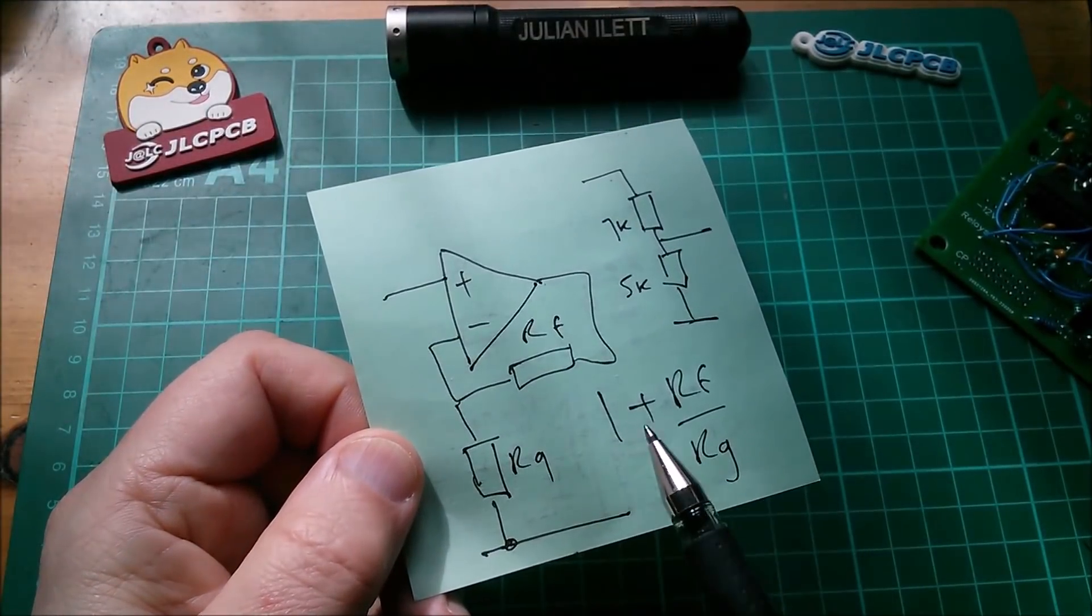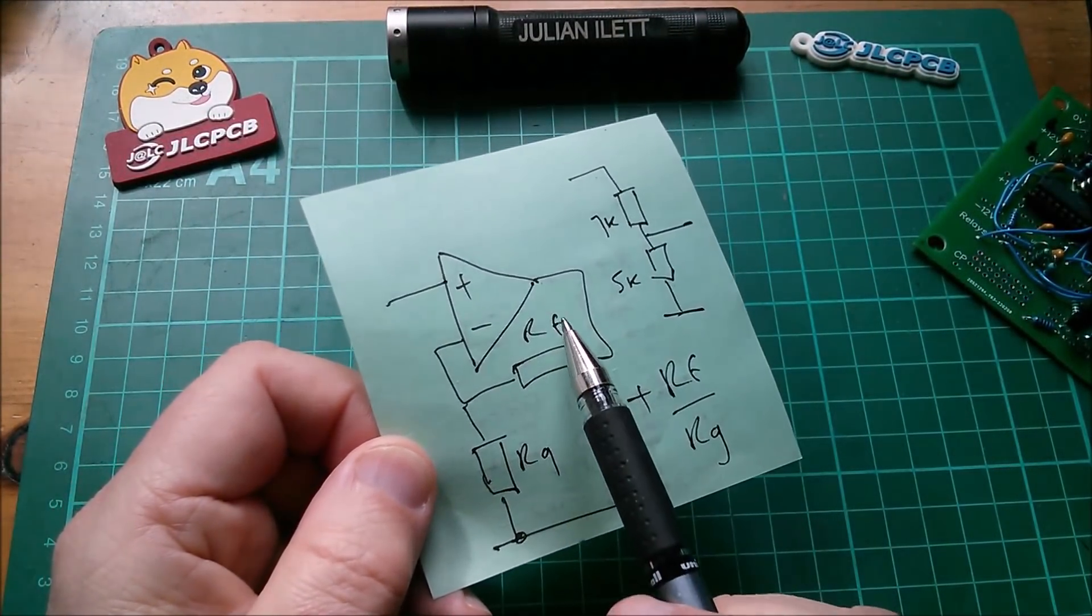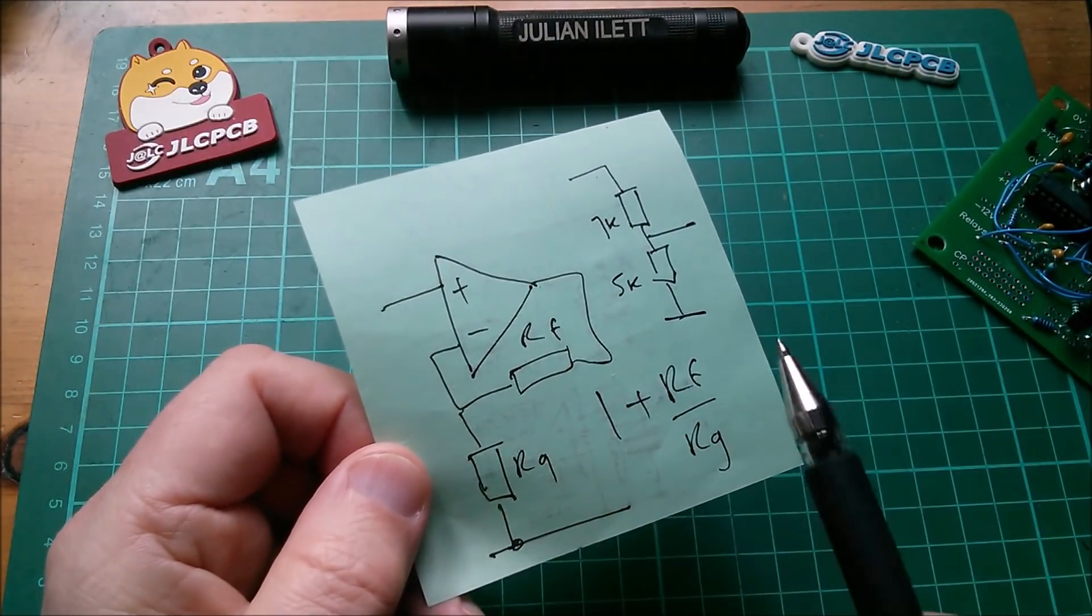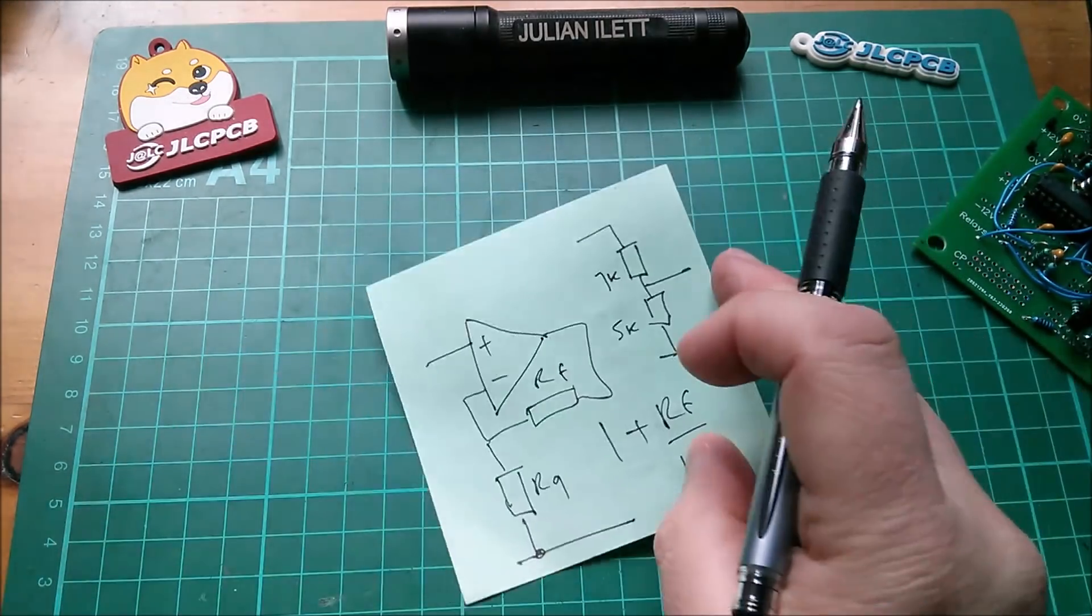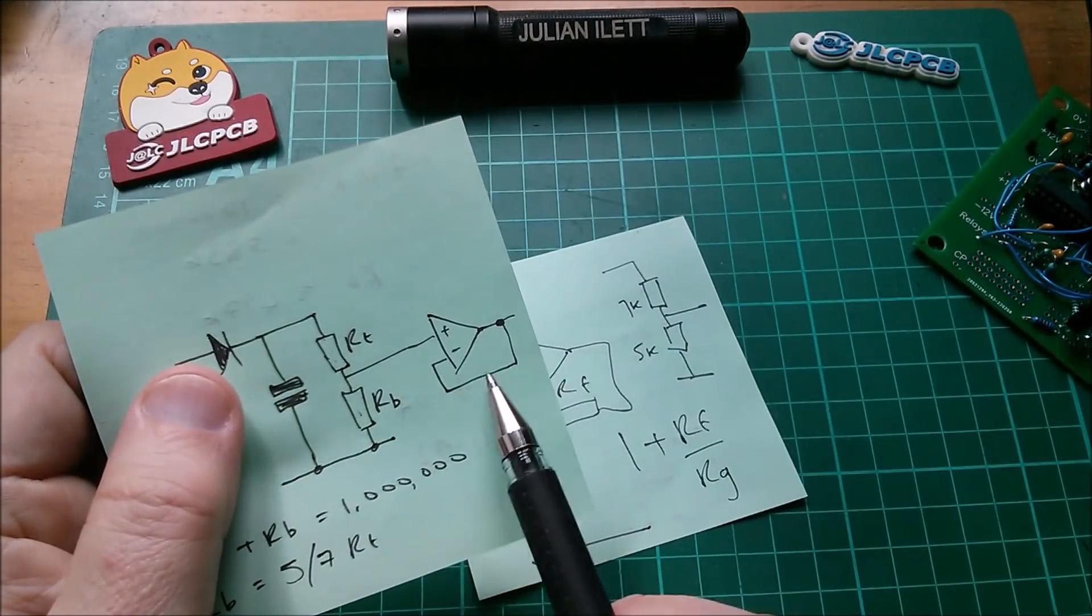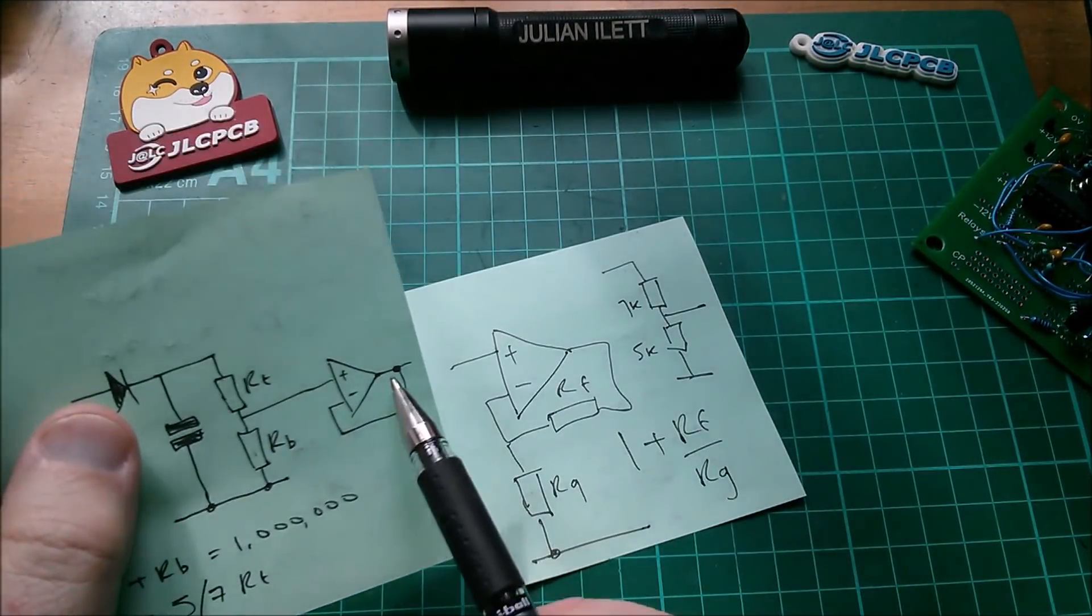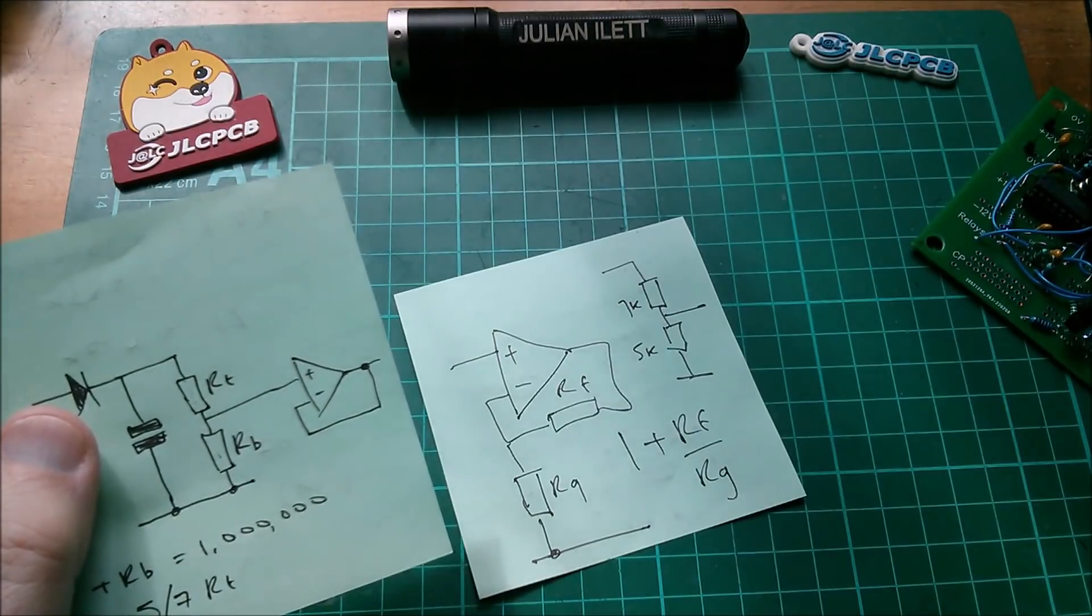Because of this annoying formula, 1 plus Rf over Rg, meaning that the gain of this amplifier cannot be less than 1. Even if you reduce Rf to 0, which essentially is this, it's a unity gain buffer, and Rg to infinity, you still can't get the gain of this less than 1. The gain of a unity gain buffer is 1.